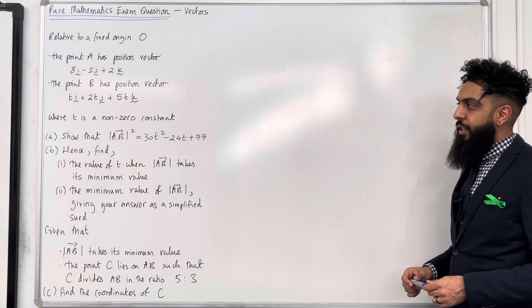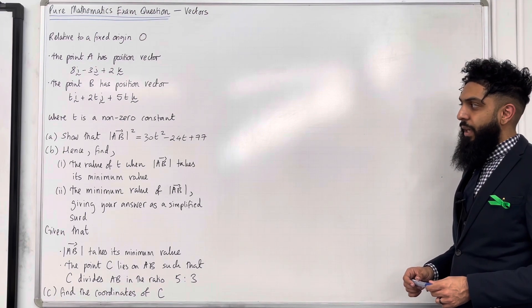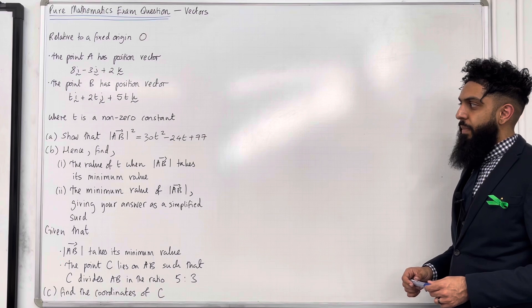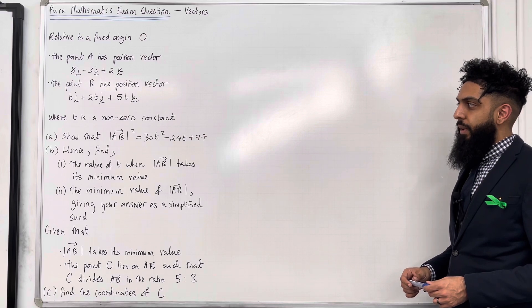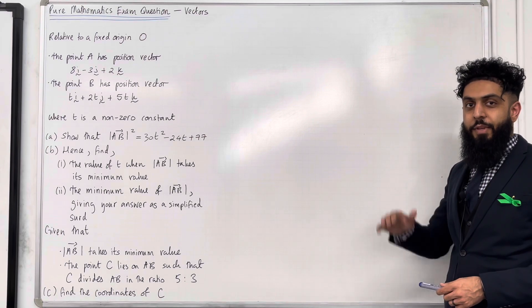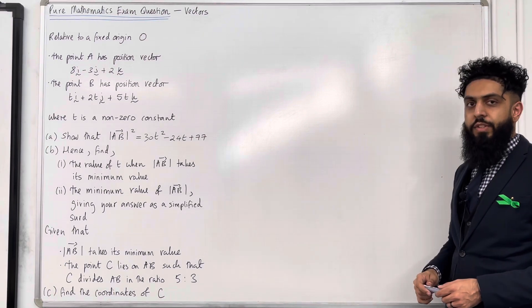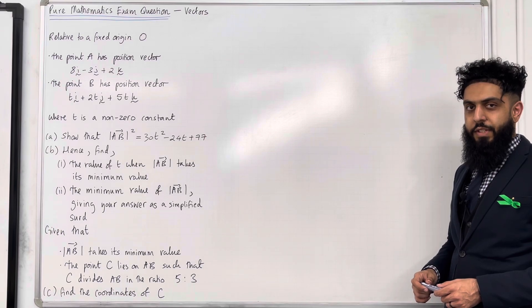Part A: show that the magnitude of AB squared is equal to 30t squared minus 24t plus 77. Ladies and gents, please pause the video, have a go at part A, and once you've got your complete solution, then play the video.